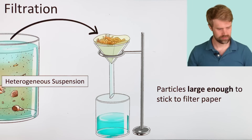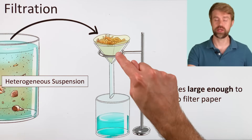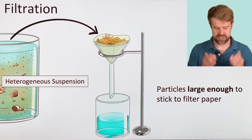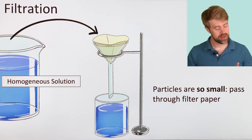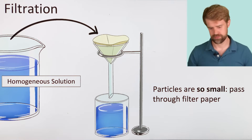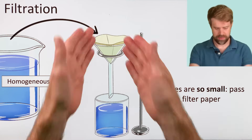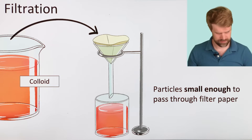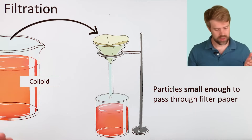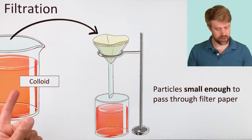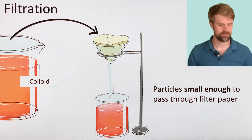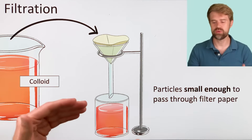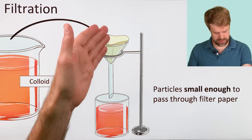Finally, let's look at filtration. A heterogeneous suspension can be separated by a filter — the particles are large enough to stick to the filter paper, like sand and water. But the parts of a solution cannot be separated by a filter; the particles are so small they pass right through. You can't separate salt from salt water using a filter. When it comes to filtration, colloids are like solutions — the particles are small enough that they pass through a filter. So when you have a liquid colloid like milk, you can't separate it into its parts by passing it through filter paper; everything passes right through.